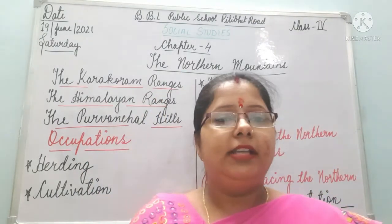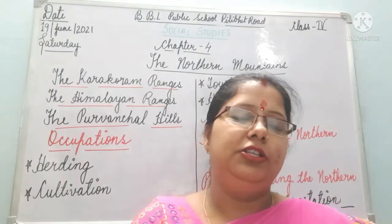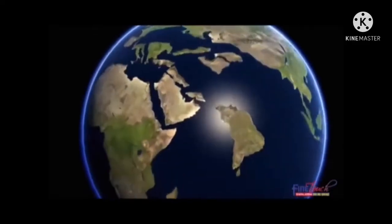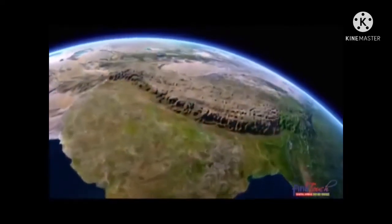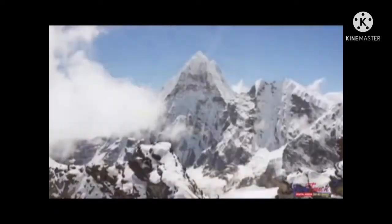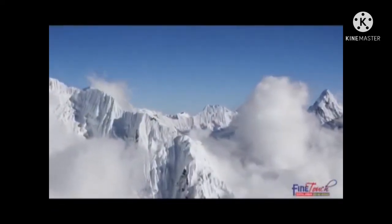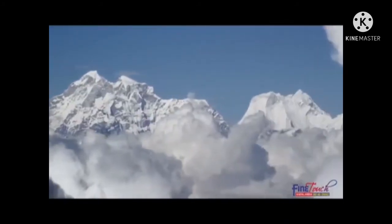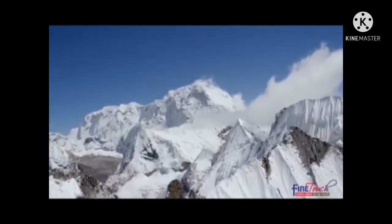Let's have a quick recap of the mountain ranges which I have taught you in the earlier videos. The mountains lie along the northern and north-eastern edge of India. It consists of several parallel ranges. The main among them are the Karakoram, the Himalayas, and the Purvanchal.